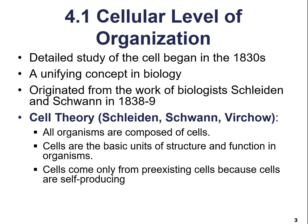Starting at the cellular level of organization, the detailed study of the cell began in the 1830s. The idea that the cell is the functional unit of living organisms is a concept that basically unifies all of biology. It originated from the work of biologists Schleiden and Schwann around 1838 to 1839, and they came up with cell theory.